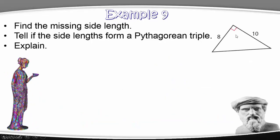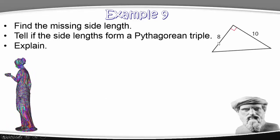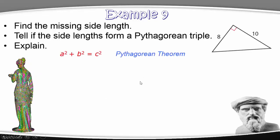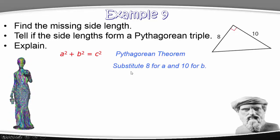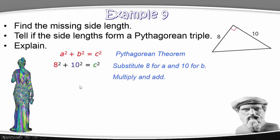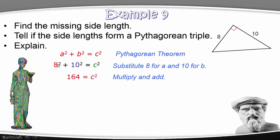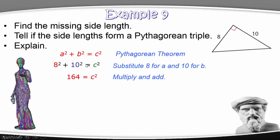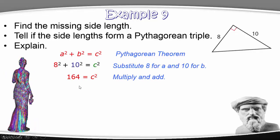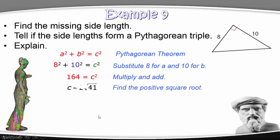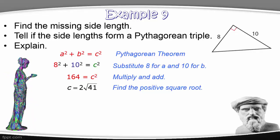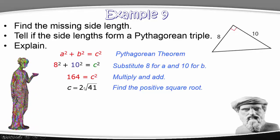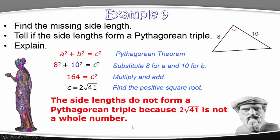In Example 9, we find the missing hypotenuse C. We plug in the two legs — one is 8 squared giving 64, and the other is 10 squared giving 100. Adding gives 164, and taking the square root of 164 cannot be simplified further. Since this is not a whole number, just like in Example 8, this cannot be a Pythagorean triple.